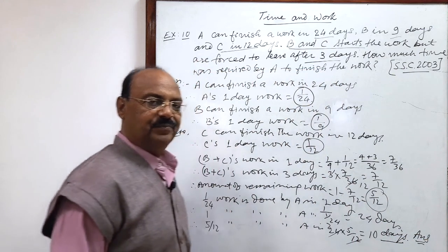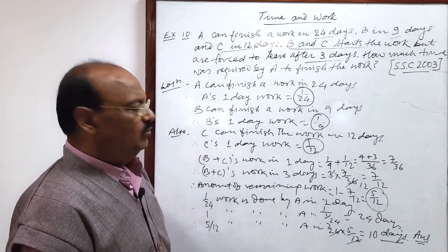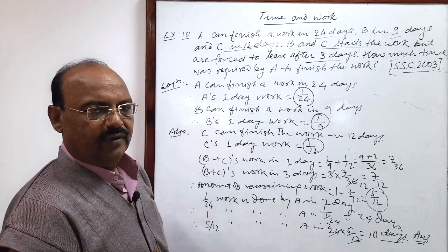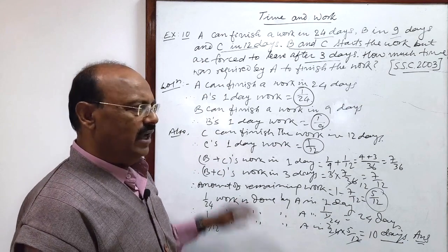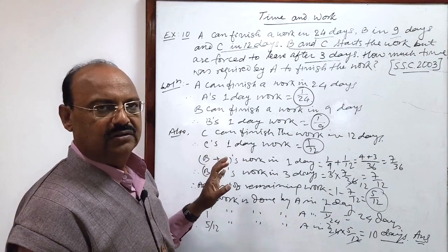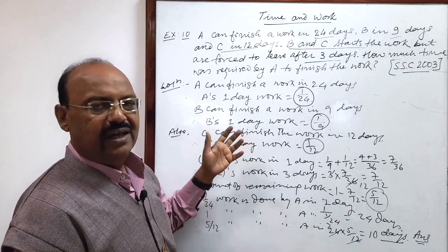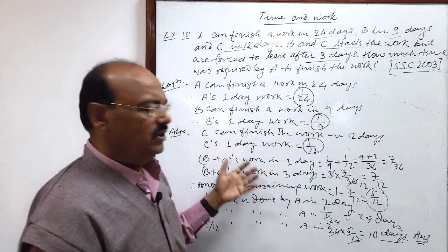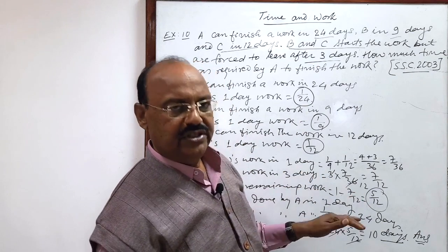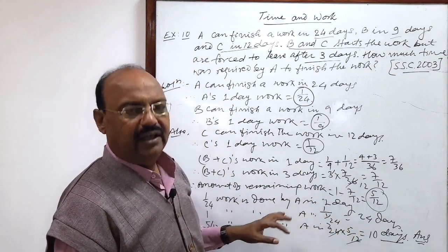Very interesting. Very simple. So, in most of the questions, what we are finding? We find that first of all, we have to calculate 1 day's work of different persons like A, B, C. And on the basis of that calculation, we can proceed and find the desired answer.